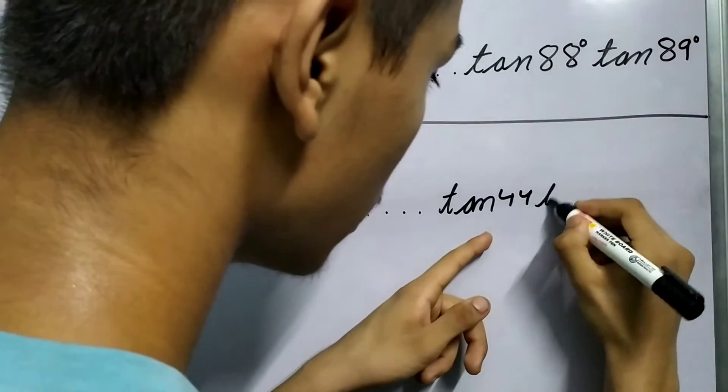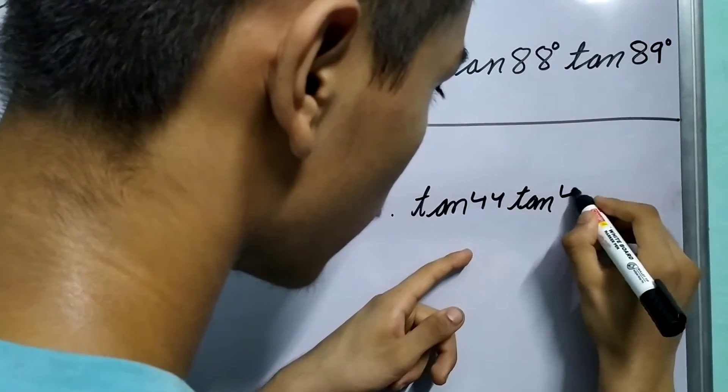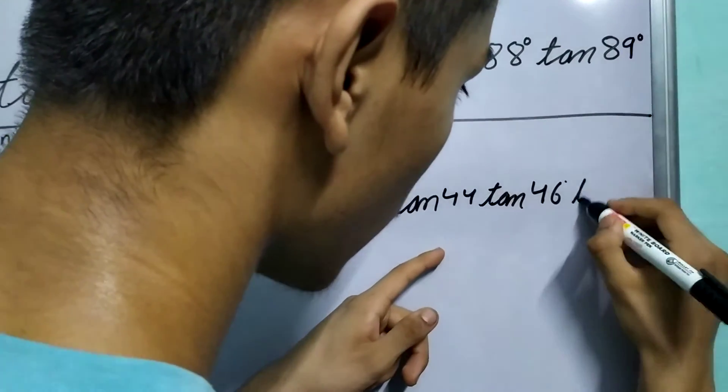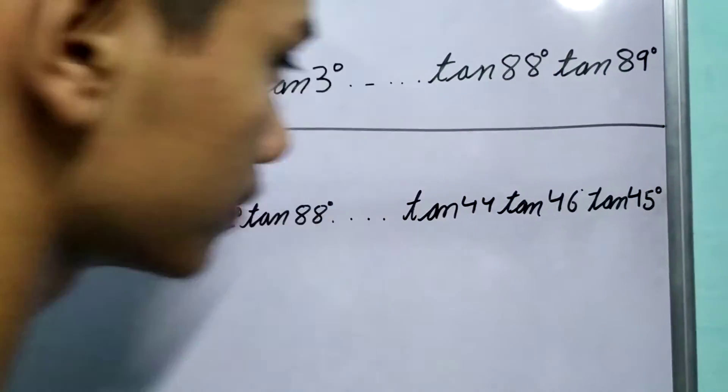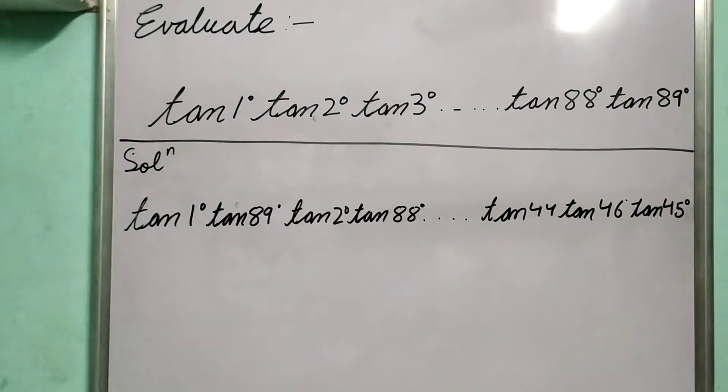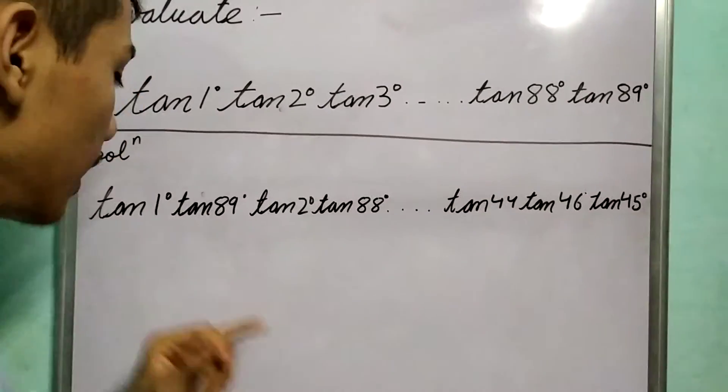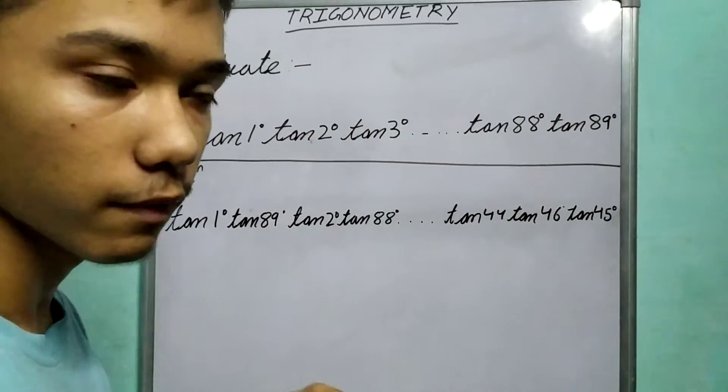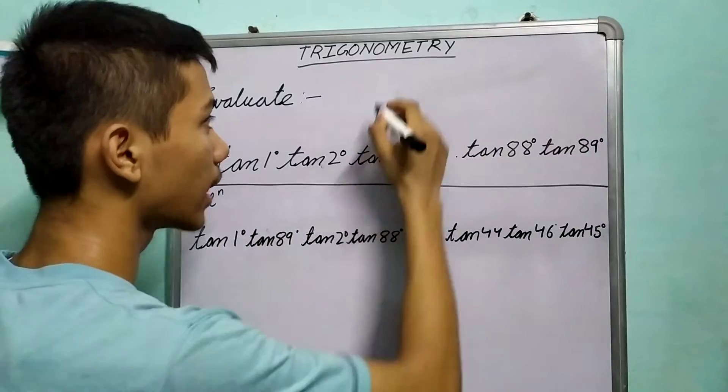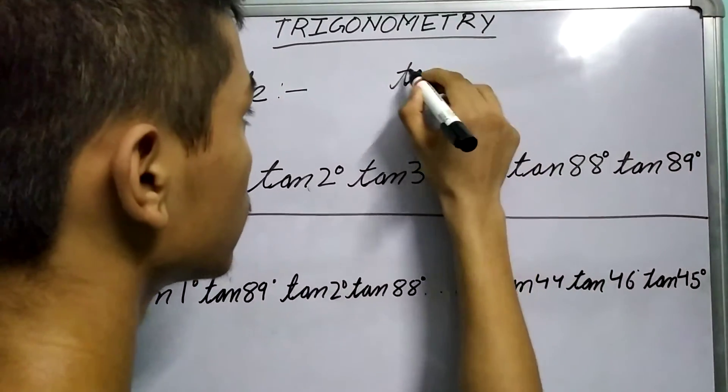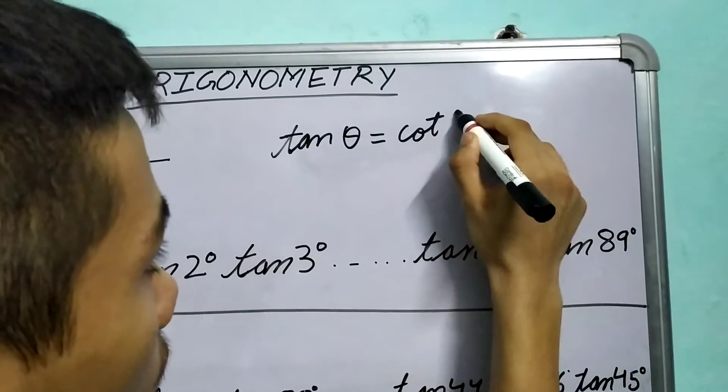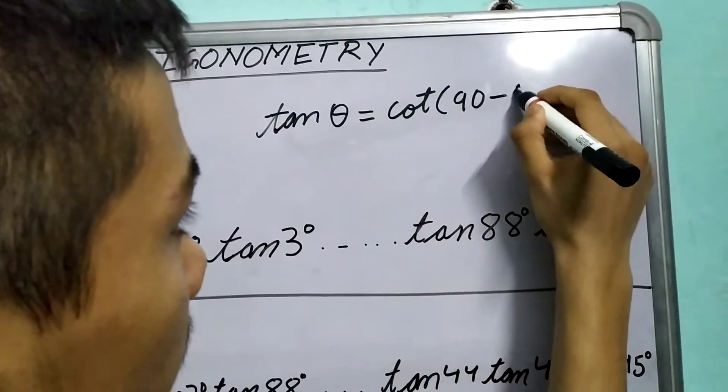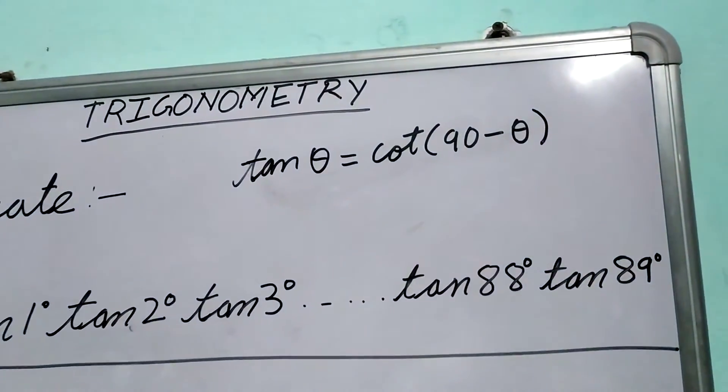And then you are left with tan 45°. Now we know a relationship between tan and cot. We'll see that tan θ = cot(90° - θ), right? We know this relationship.